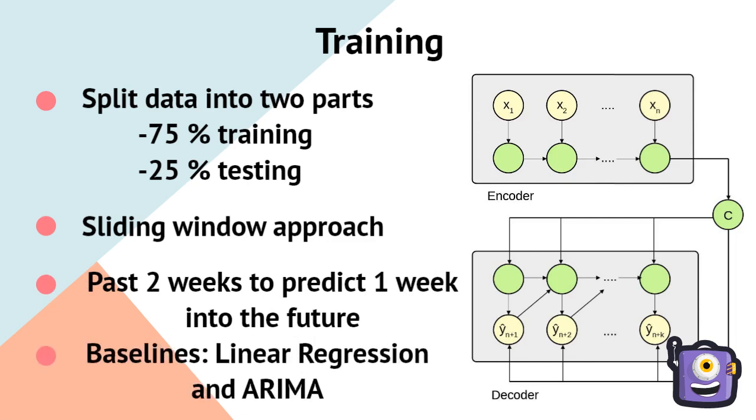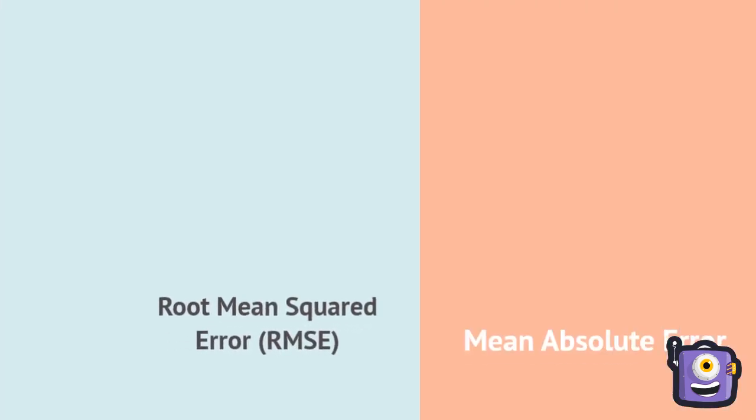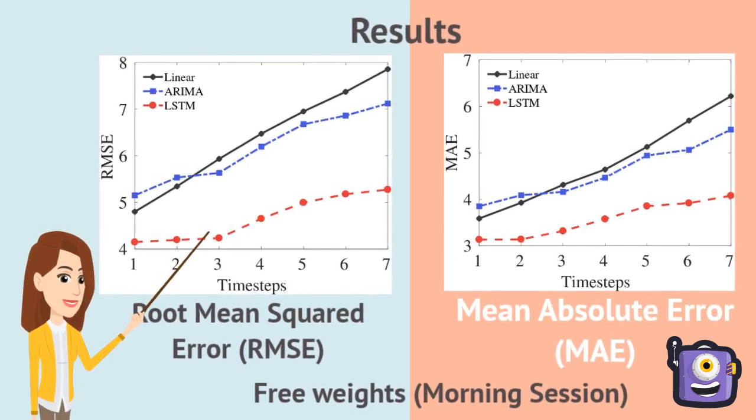We compare the performance of the deep learning model with two baselines: linear regression and ARIMA. The results show the performance of the models with respect to RMSE and MAE for free weights morning session. We observe that the LSTM-based model significantly outperforms the baselines.